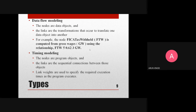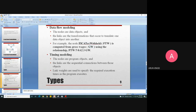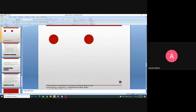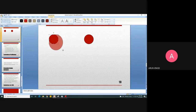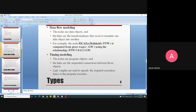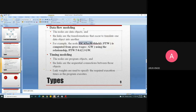In data flow modeling, the nodes represent data objects and the links represent the transformations that translate one data object into another. For example, one node is gross wages (GW) and another node is federal tax withholding (FTW). Let me show this with an example on the board.